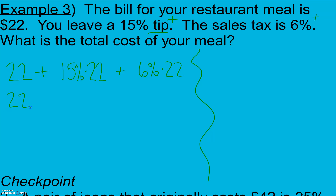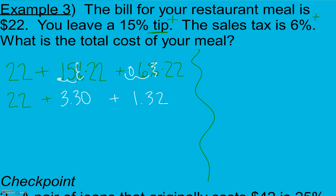So the total cost for the meal starts with the $22 charged. Getting rid of the percent sign by moving two decimal places: 0.15 times 22 is $3.30. Then 0.06 times 22 is $1.32. We take our food cost, our tip, and our tax, add all these together, and we get $26.62.